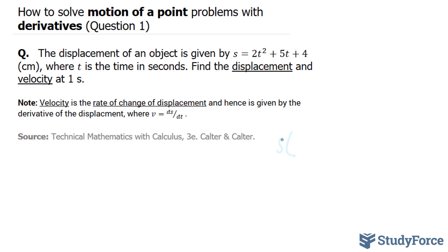we have s(1) = 2(1)² + 5(1) + 4. This becomes 2, that becomes 5, and we're left with 2 + 5 + 4 = 11. So in one second, this object has moved 11 centimeters.